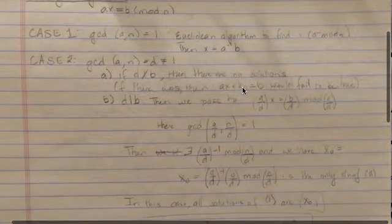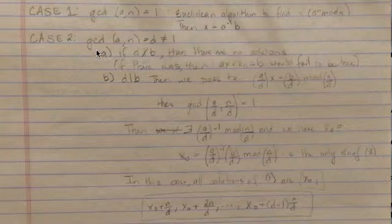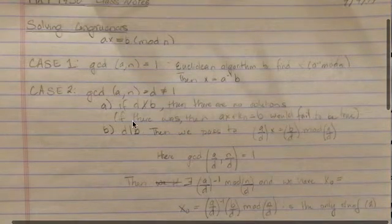However, in the case that it is not, there are two options. The first one is that the greatest common divisor is not one, which we're calling d, and where the d does not divide the b here.